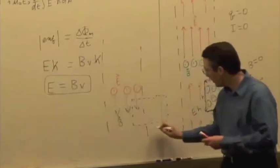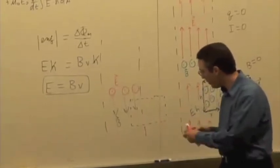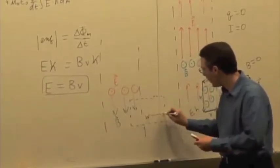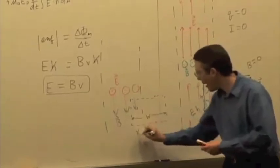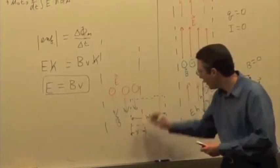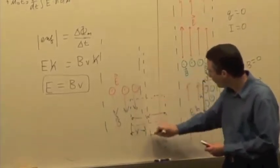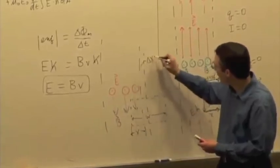I'm going to have the width W. This is X. And it's moving a little bit, delta X, which is equal to V delta T.